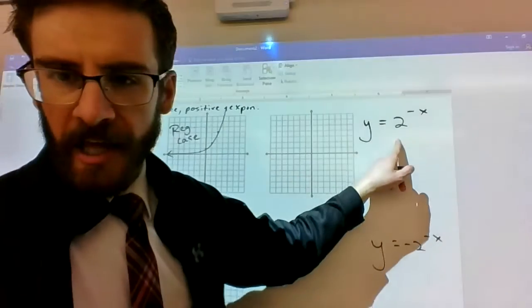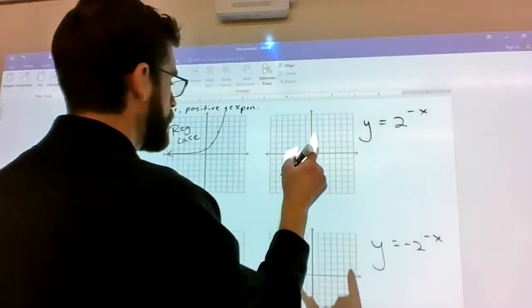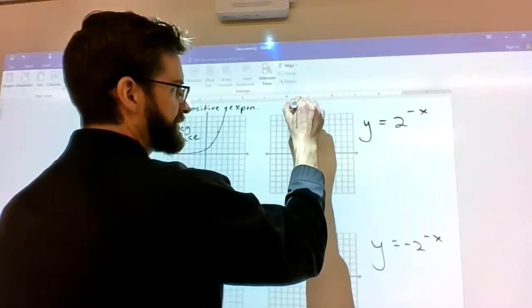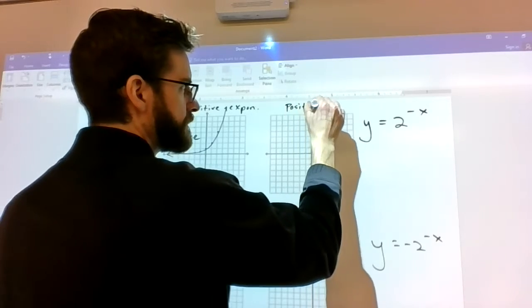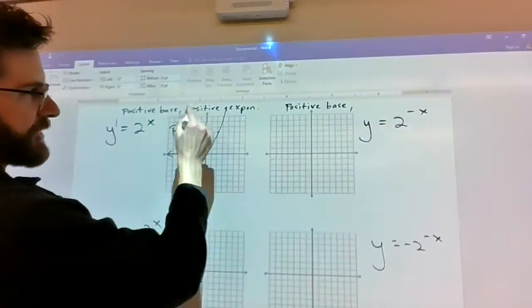Now what do you think it's going to look like if we make the exponent negative? So here we've got a positive base and a negative exponent.